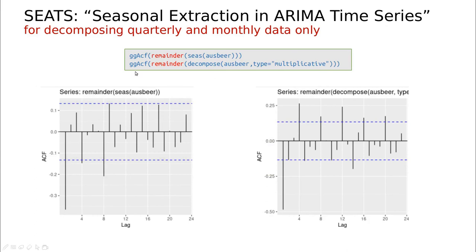Looking at the autocorrelation function: here is the original multiplicative decomposition, and here is SEATS. Besides one point outside the confidence lines — suggesting some long-term correlation — and the fact that a lag of 8 indicates some periodicity still in the series, we have almost removed all the seasonality. So you can see that there is an improvement over X11.